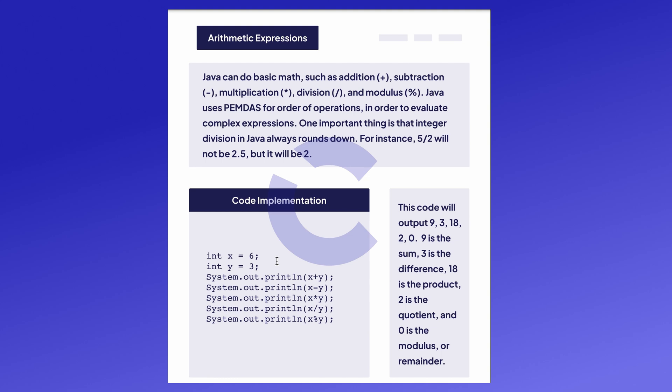Java uses PEMDAS or order of operations just like we do in real life, and there's one thing with integer division in Java, Java will always round down. So for example 5 divided by 2 will not be 2.5, rather it will be 2.